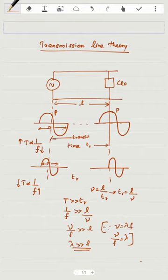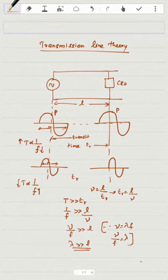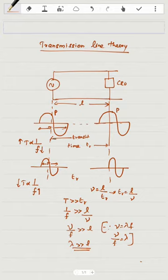This is one of the key points to take away for high frequency circuits. Whenever the signal wavelength is greater than the length of the wire, the transit time effect will be negligible. In that case, we can use the standard circuit analysis model — simple current and voltage laws — to find the voltage and current at each node or point of the component.